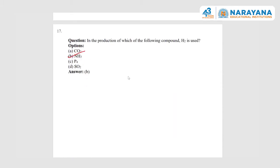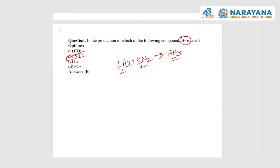Next question: the Haber process — H₂ + N₂ gives ammonia. The balanced equation is N₂ + 3H₂ → 2NH₃, or half N₂ plus three-halves H₂ gives NH₃. This is a direct question about the production of ammonia, and the answer is option B.